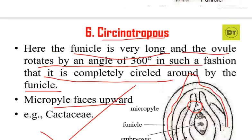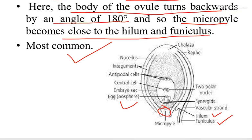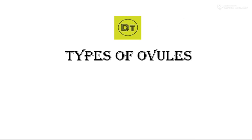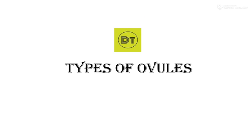So these were the six types of ovules found in angiosperms, out of which the anatropous ovule is the most common. I hope this video is helpful to you all. If you like my videos, please subscribe to my channel and share it among your friends. I'll put the link of the previous video in the description box — until then, good luck and goodbye.